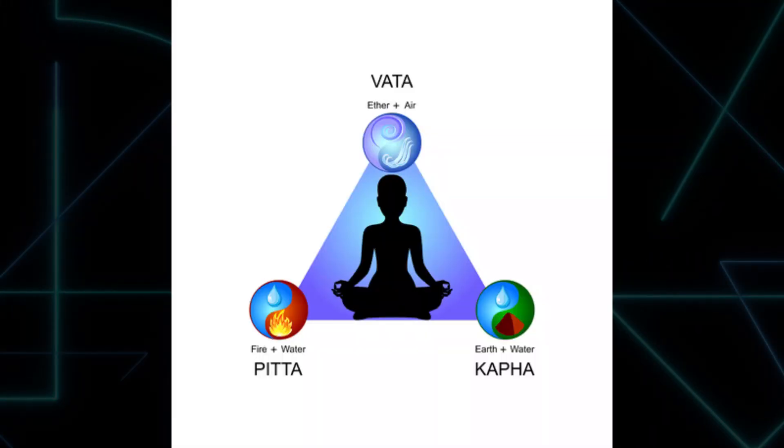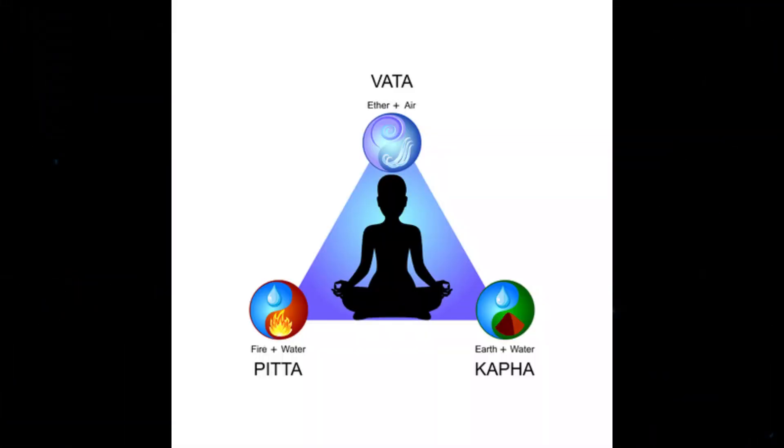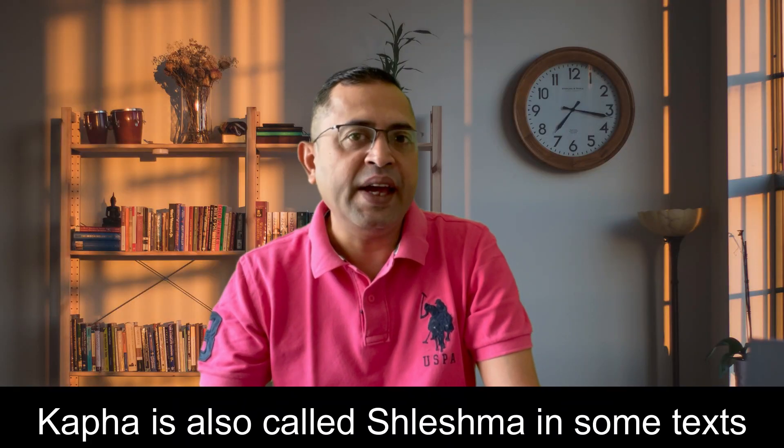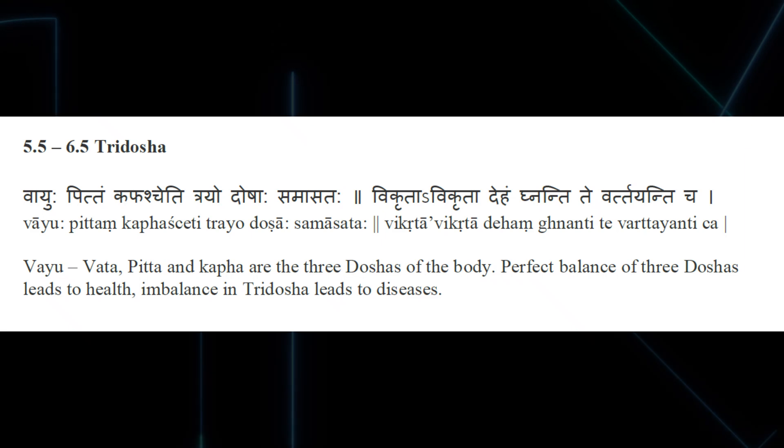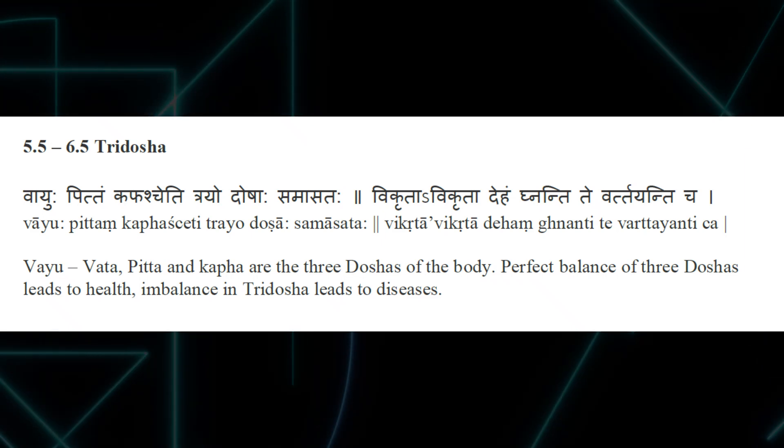What makes Ayurveda what it is is the Tridosha principle — the famous trio of Vata, Pitta and Kapha. If you remove these, there is no Ayurveda. But it is simply a very wrong concept. According to its theory, diseases are caused due to imbalance of these three non-existent things. When they are in balance, you are healthy; when there is an increase or decrease in Vata, Pitta or Kapha, you get diseased. Till date, no one knows what exactly these are, but the texts mention where they are located in the body nonetheless.